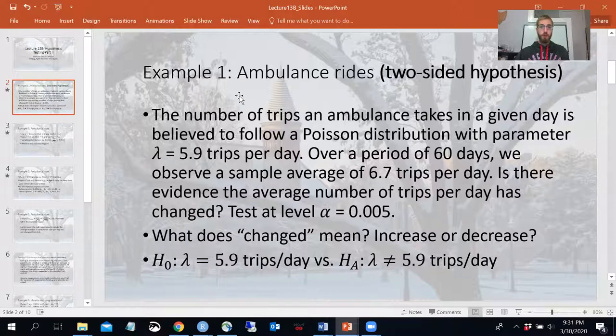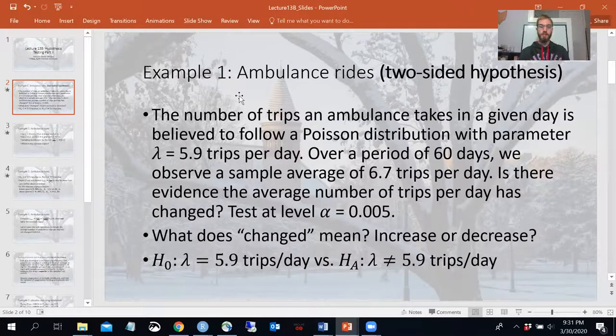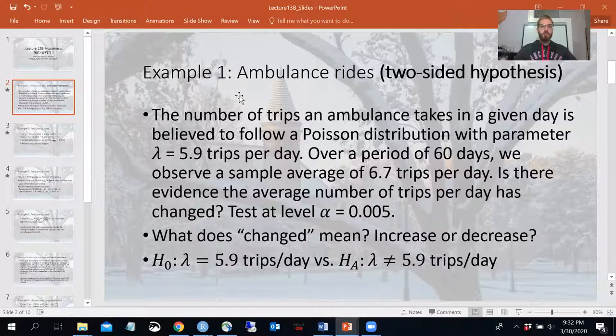So for this example, this is a little bit different because we'll have what we call a two-sided hypothesis here. So take a moment, read the problem. We have the number of trips an ambulance takes in a given day. We assume it has a Poisson distribution with parameter lambda 5.9 trips per day. Keep track of the units associated with the parameter because ultimately you're going to be drawing conclusions in the context of the problem you're interested in. We're talking about ambulance trips, so we want to not lose track of what this problem is really about.